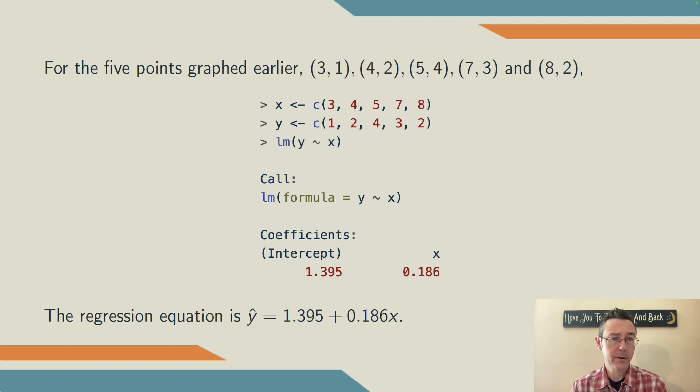The important part of this output is at the bottom, where it says coefficients, where we're given intercept and x. Remember, we're trying to fill in the gaps in the general form of a regression line, ŷ = a + bx, and so those coefficients are a and b, respectively.